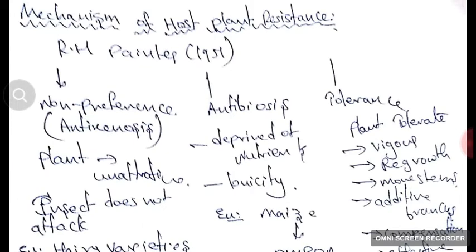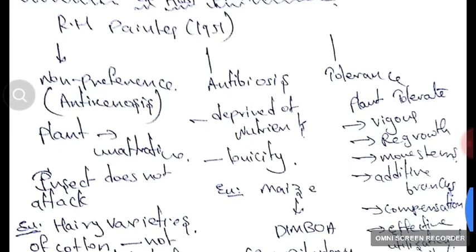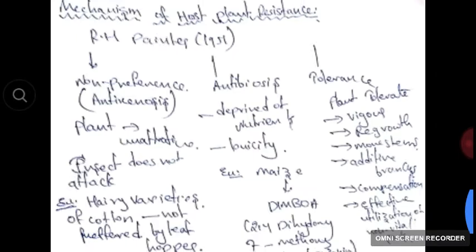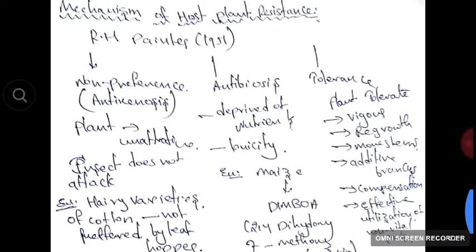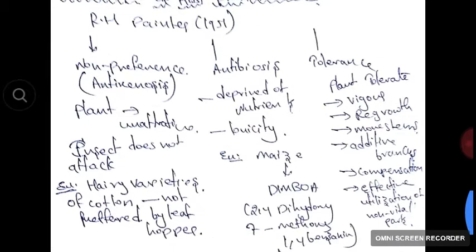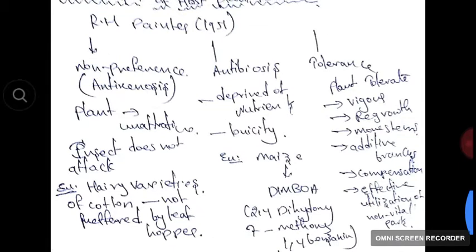The mechanism of host plant resistance was introduced by R.H. Painter in the year 1951. It includes three parts: non-preference, antibiosis, and tolerance.